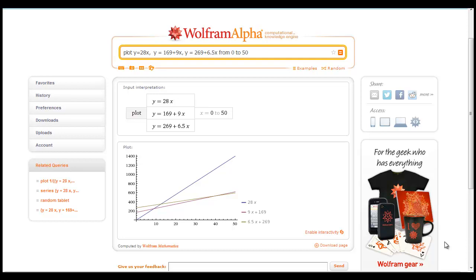So this is a project comparing the costs of buying hardbound books and e-readers with books. This first equation is the average hardbound book is $28 on Amazon. And then this next one is a Nook, $169 and $9 an e-book. And then the Fire was $269 at $6.50 an e-book.